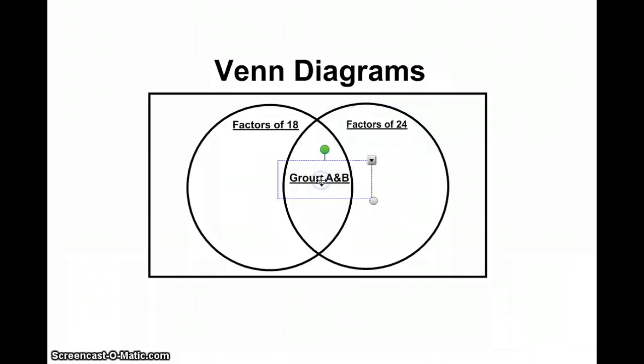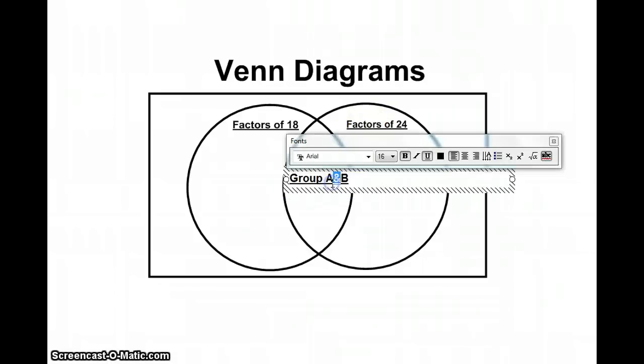If you look in the center section where they overlap, here is where anything goes that satisfies condition A and condition B. So in this part of the Venn diagram I would put anything that is a factor of both 18 and 24.